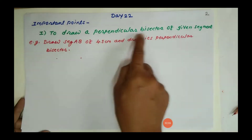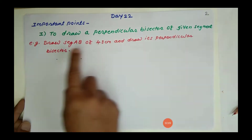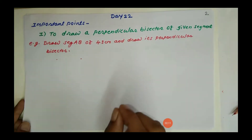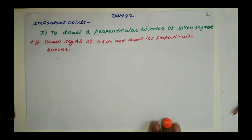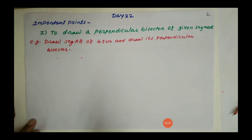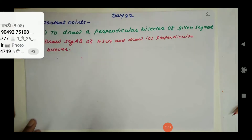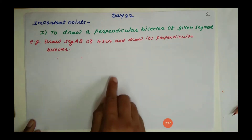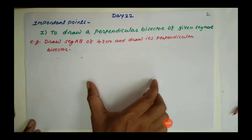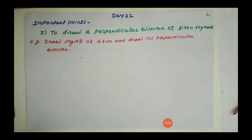A segment will be given to you and you have to draw the perpendicular bisector of that segment. The perpendicular bisector makes a 90-degree angle with the line and divides the segment into two equal parts. First, draw a segment AB of 4.3 cm.